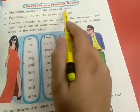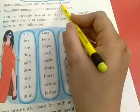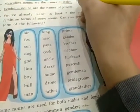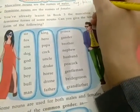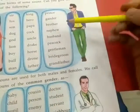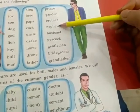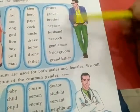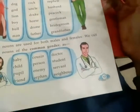Masculine nouns are the names of males. For example: king, prince, man, prince, gender, brother, nephew, husband, peacock, gentleman, bridegroom, grandfather. They all are masculine nouns.